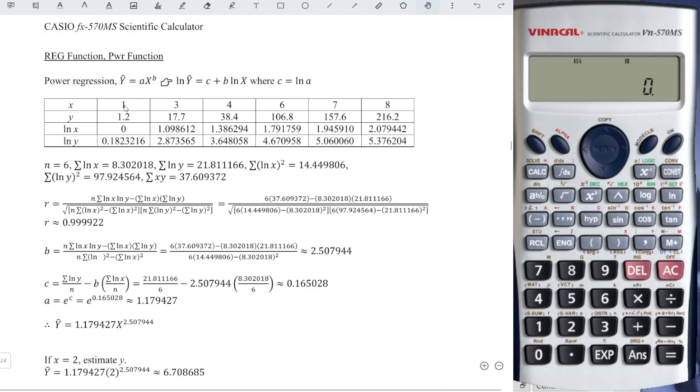So let's input the data. First pair, we have 1 and 1.2, so x is 1 comma 1.2. This must be the sequence x comma y, followed by n plus to input. We will obtain n equals 1 to indicate the first pair that we have.